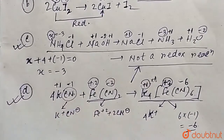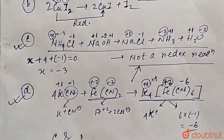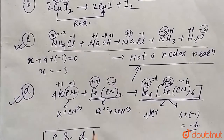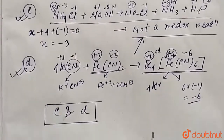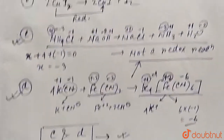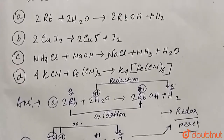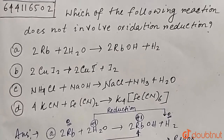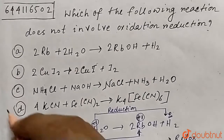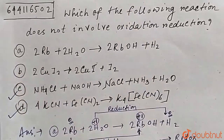So we have our final answer: both option C and option D are not redox reactions. These are the correct answers, and we should tick mark both C and D.